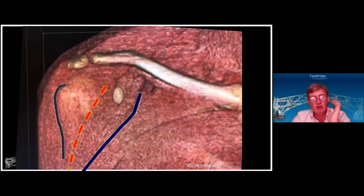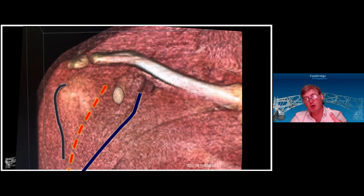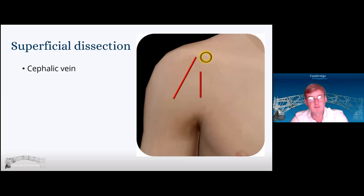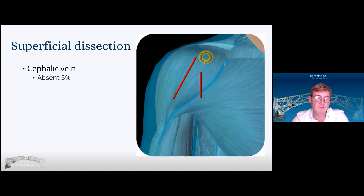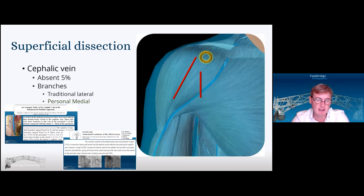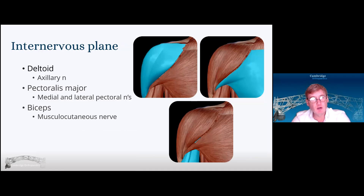If your incision starts laterally, once you've gone through your skin and subcutaneous fascia down to the muscle layer, you know the cephalic vein is medial. The cephalic vein defines the deltopectoral groove and is absent in about 5% of cases. I take it medial, but traditionalists take it lateral — I think it really is a 50-50 call. The internervous plane is between deltoid, supplied by the axillary nerve, pectoralis major, supplied by the medial and lateral pectoral nerves, and biceps, supplied by the musculocutaneous nerve.